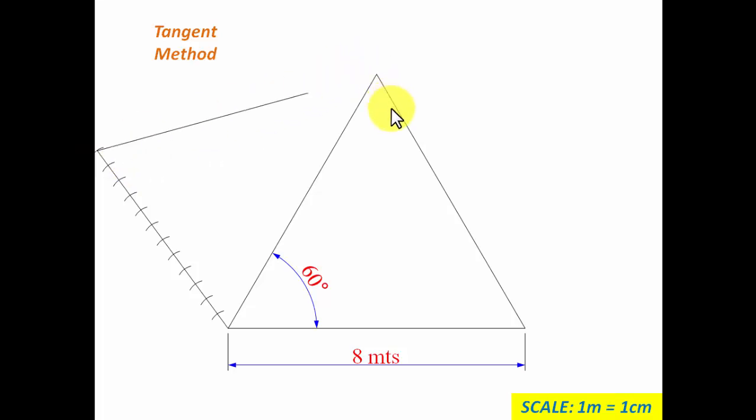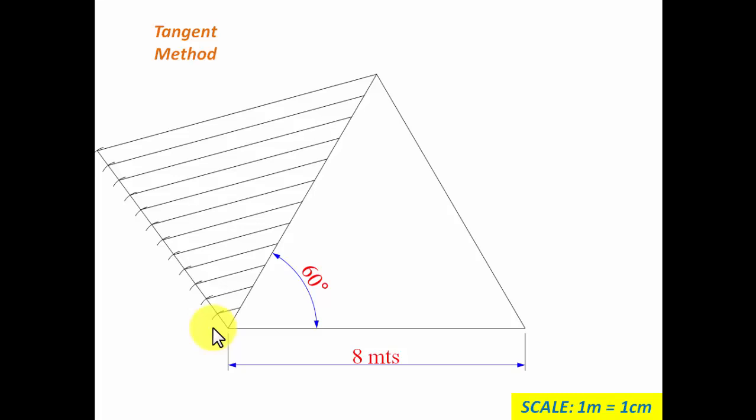Now the 12th point has to be joined with this one. And then keep your mini drafter set along this line, aligned along this line, tighten the screw, bring it to the 11th point, 10th, nine, eight, seven, six, five, four, three, two, one. There you go. So you can clearly see that this line gets divided into 12 equal parts. So we're going to start from here, let's say this is zero, this is going to be one, two, three, four, five, six, seven, eight, nine, ten, and this is going to be 11.